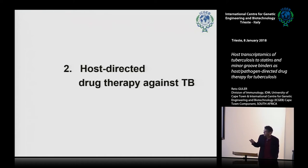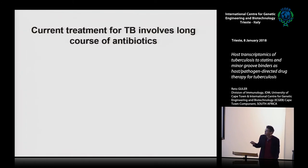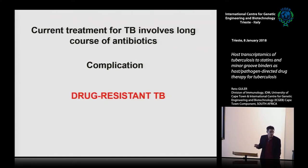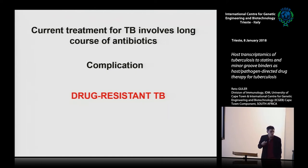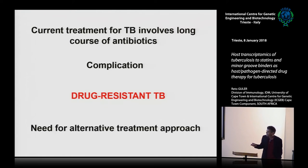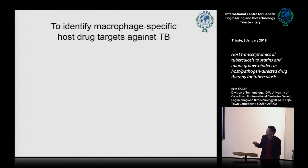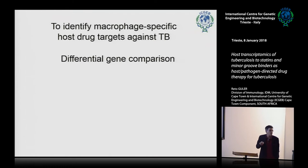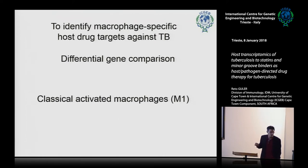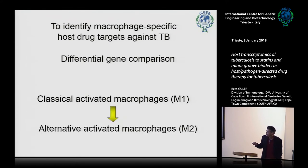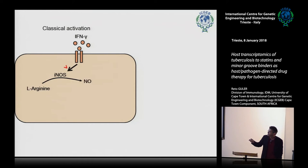The current antibiotic treatment has a severe complication — there are many different strains of TB including multi-drug-resistant, extremely drug-resistant, and even totally drug-resistant strains. There is certainly a need for an alternative treatment approach. We want to focus on macrophages and identify which genes TB regulates. We performed a differential gene comparison in macrophages that are classically activated (M1) or alternatively activated (M2).